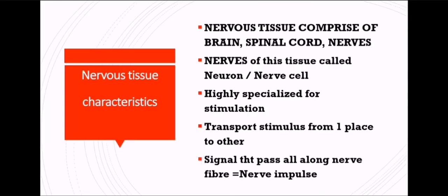Now we are going to learn about nervous tissue. Nervous tissue is related to your brain, spinal cord, or nerves. It is present in the brain, spinal cord, and nerves. The cells of this tissue are called neurons — also called nerve cells. There are many people who get confused between nerve cell and neuron, but they mean exactly the same thing.